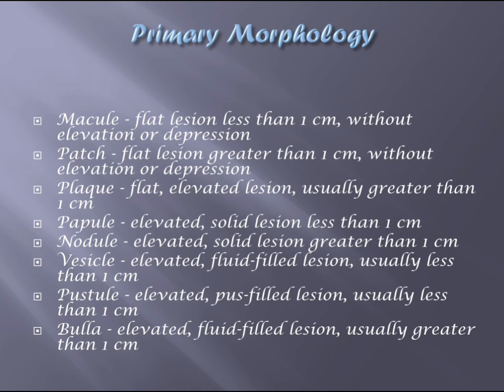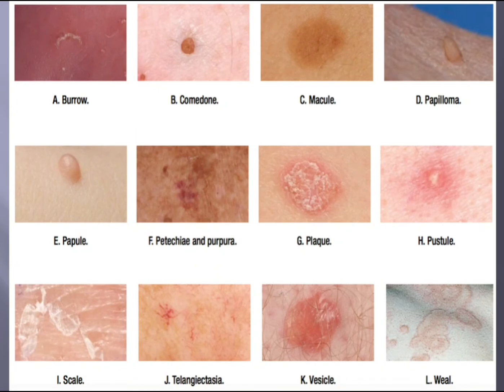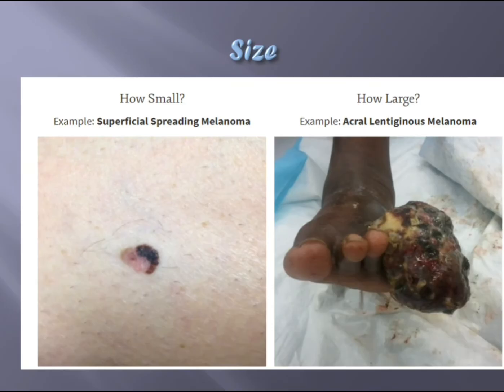A vesicle is an elevated fluid-filled lesion usually less than one centimeter. The difference between a papule and vesicle: they're both elevated, both less than one centimeter, but a papule is solid and a vesicle is fluid-filled. A pustule is an elevated pus-filled lesion usually less than one centimeter. A bulla is an elevated fluid-filled lesion usually greater than one centimeter. The diagram shows a bulla, comedone, macule, papule, petechia, purpura, plaque, pustule, scale, telangiectasia, vesicle, and wheal.